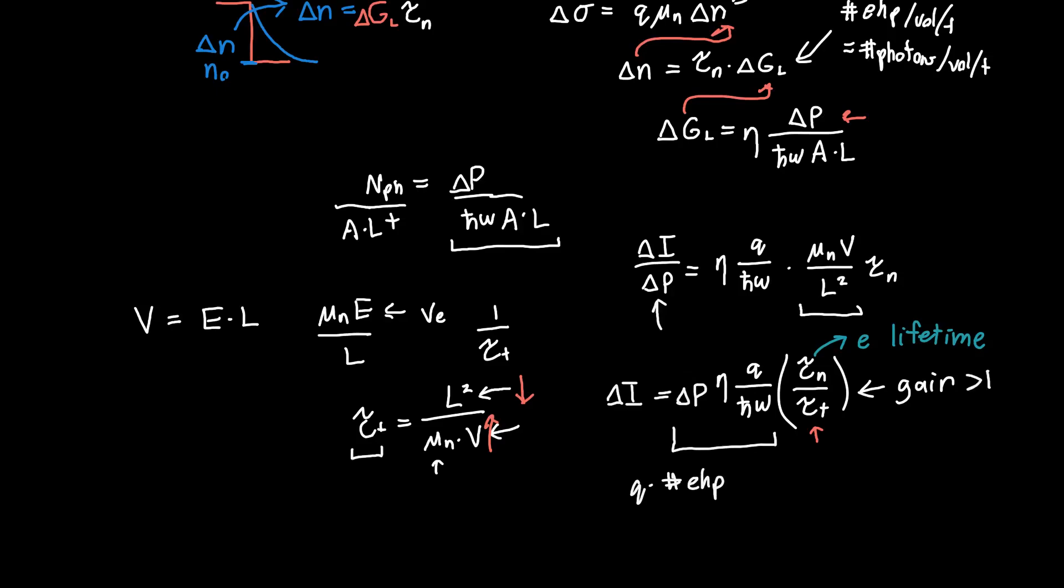So if this gain is bigger than one, then for every electron-hole pair we're actually able to get more than one electron's worth of current.